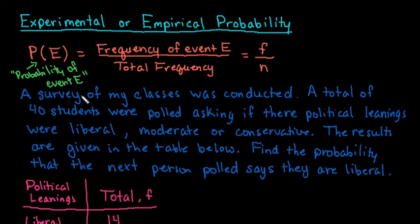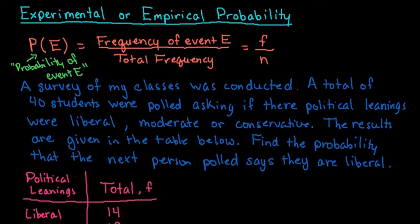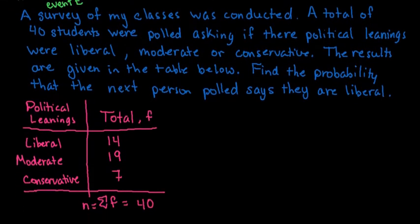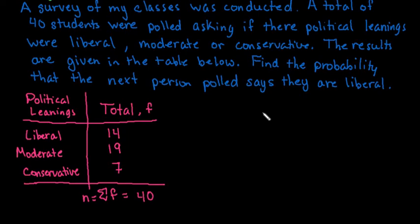For this one, we have a survey that was conducted in one of my classes. There were a total of 40 students who were polled, and I asked them if their political leanings were liberal or to the left, moderate or kind of in the middle, or if they tended to lean more to the right or if they were conservative. The results are given in the table below, and we're going to specifically look for the probability that the next person, like if I were to ask another class and what their leanings were, based on this study of the 40 people that were polled, what is the probability that the next person I ask is liberal?